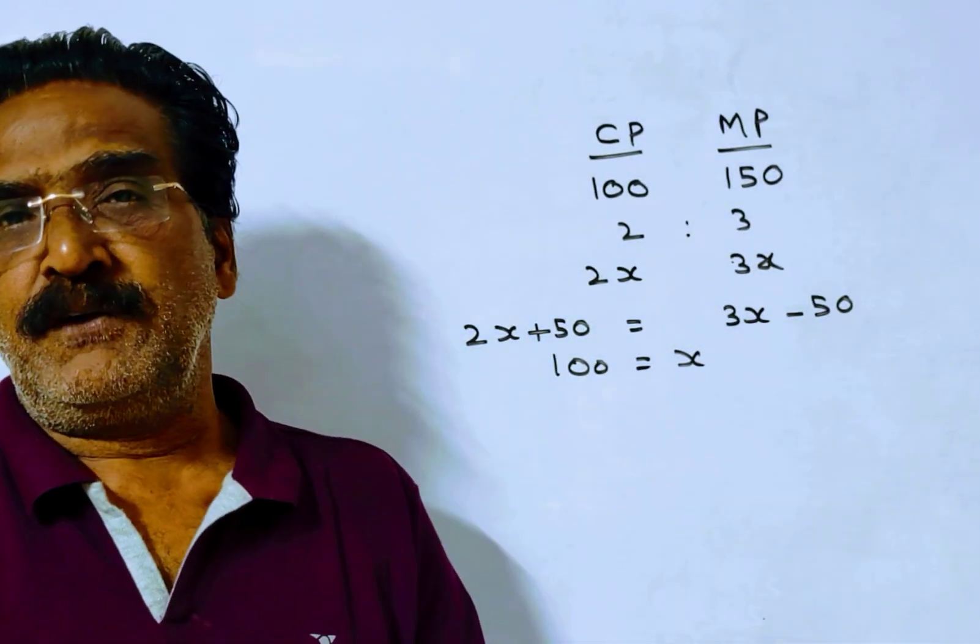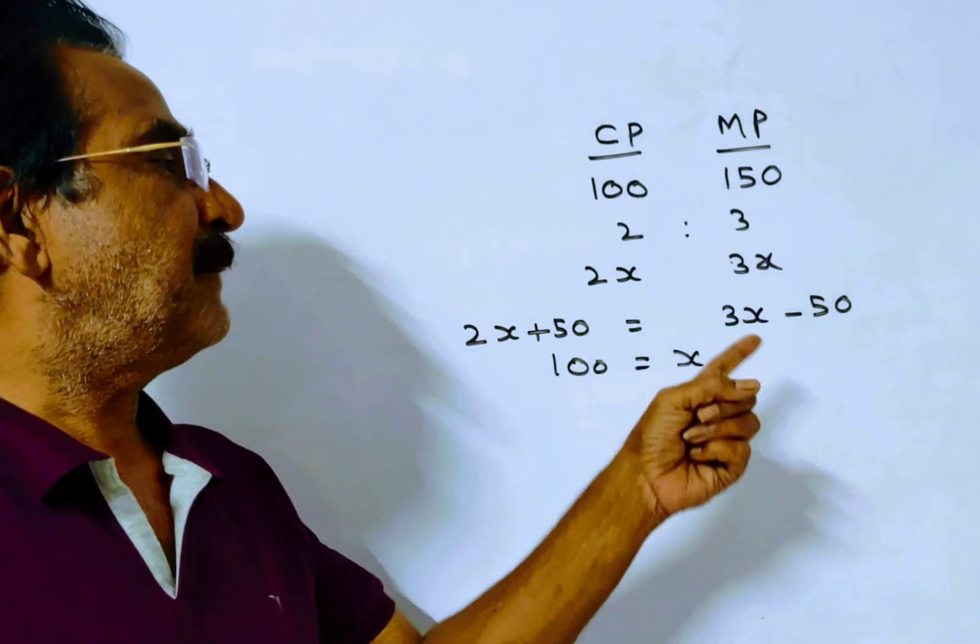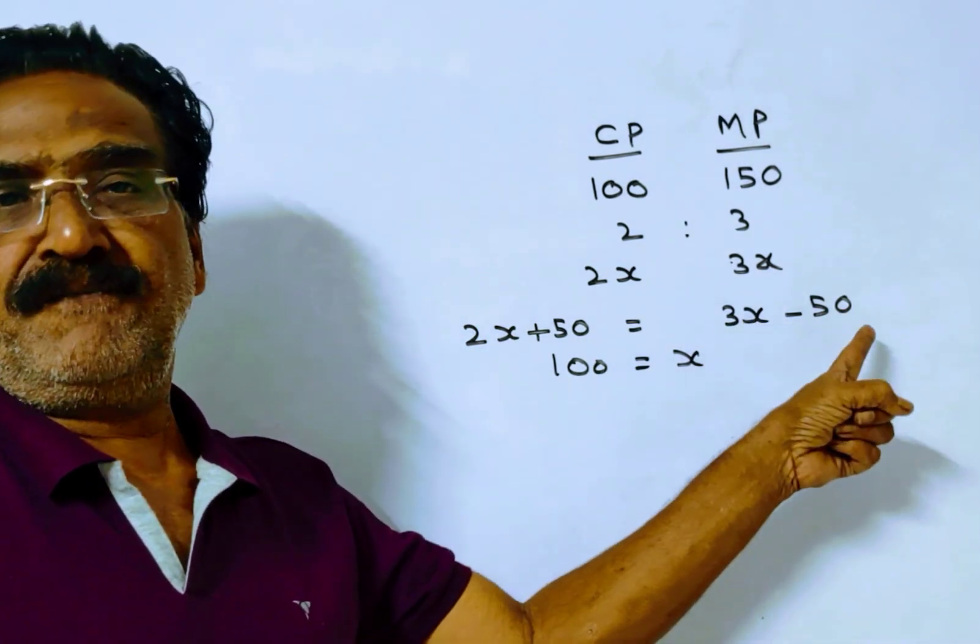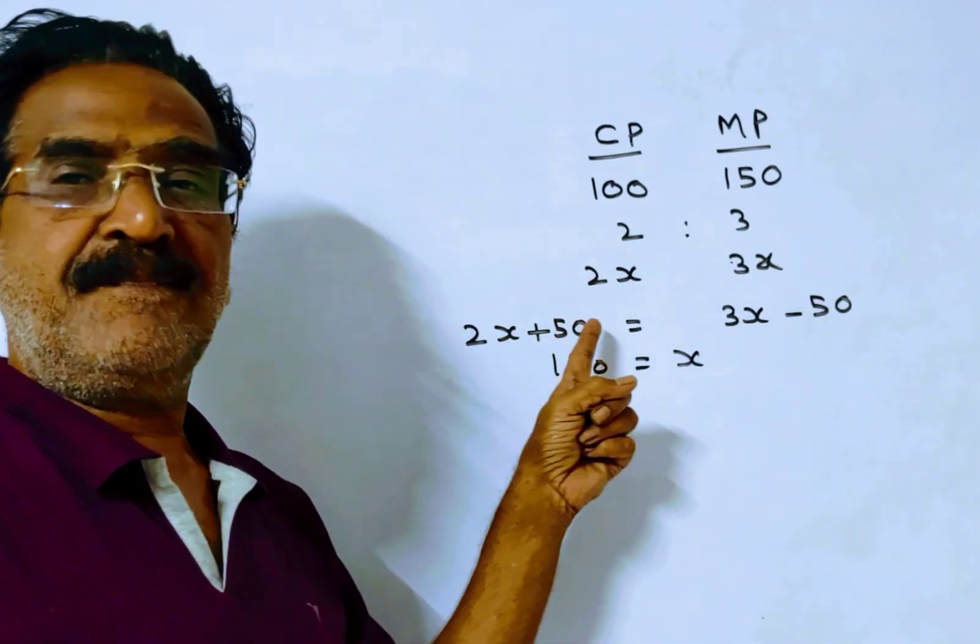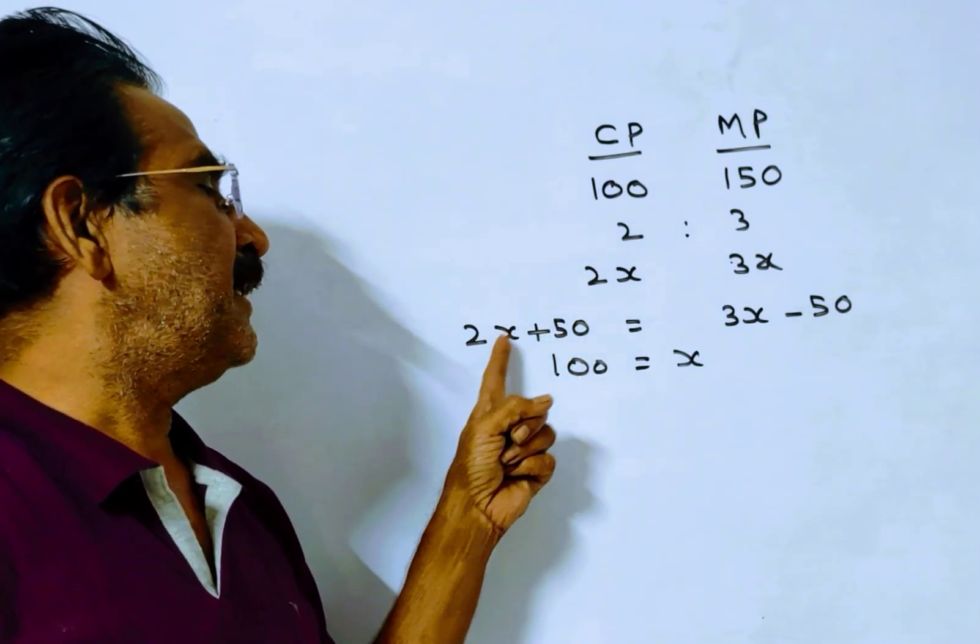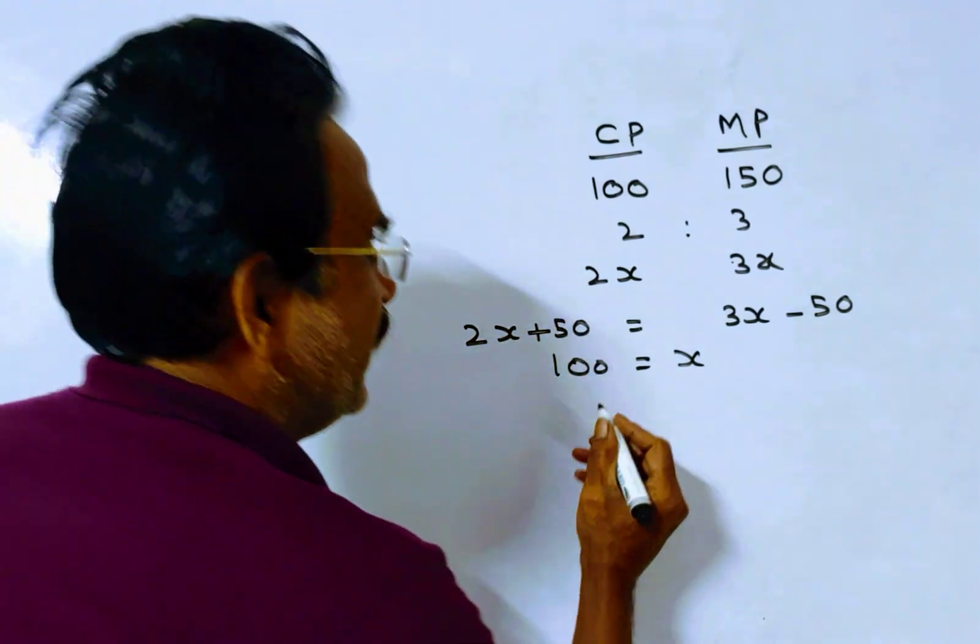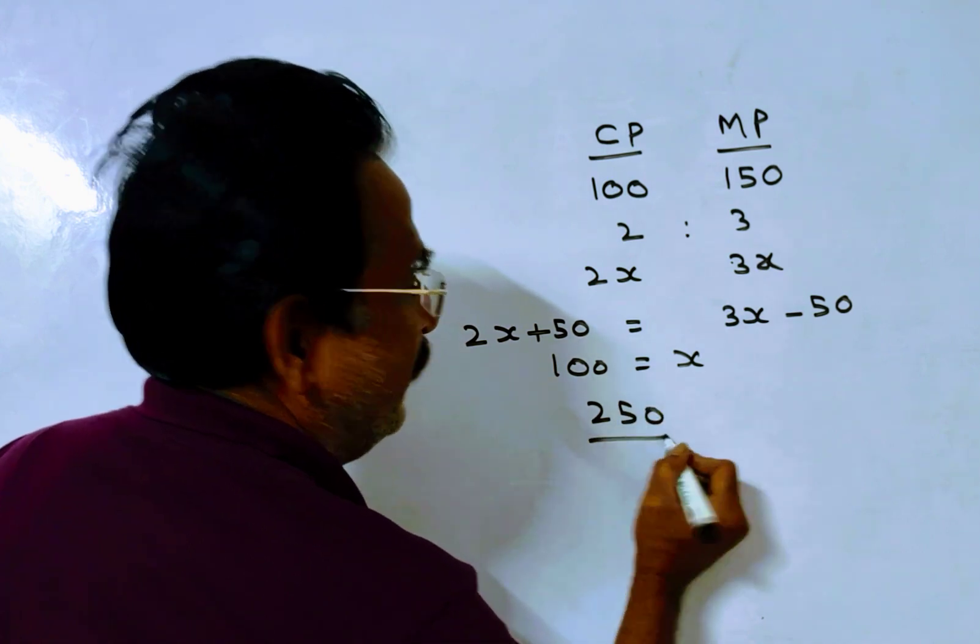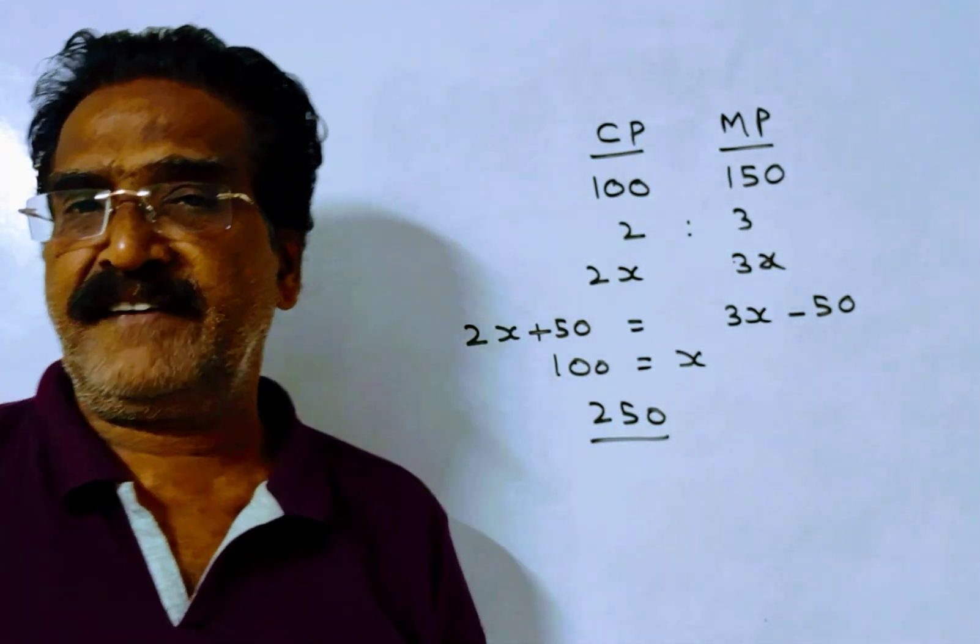We want the selling price. Selling price is 3x minus 50 or 2x plus 50, so 200 plus 50 equals 250. This is the selling price of the article. Okay friends, thank you. Have a nice day.